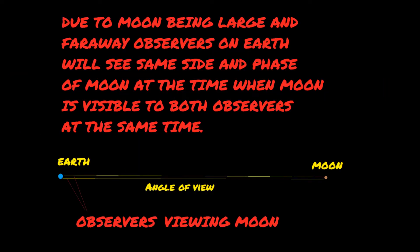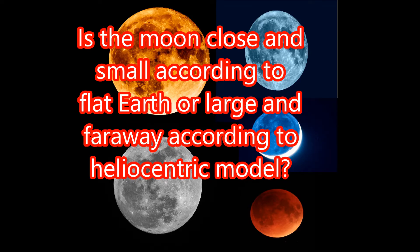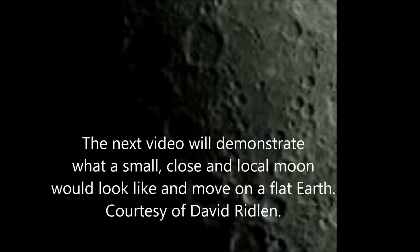Here is a diagram of the angle of view from the earth to the moon. Is the moon close and small according to the flat earth, or large and far away according to the heliocentric model? The next video will demonstrate what a small, close, and local moon would look like and move on a flat earth, courtesy of David Ritalin.